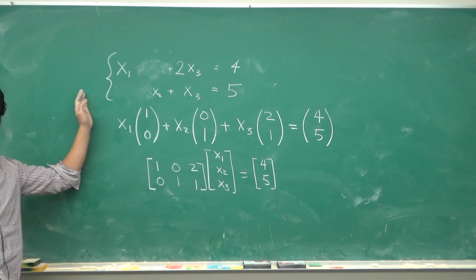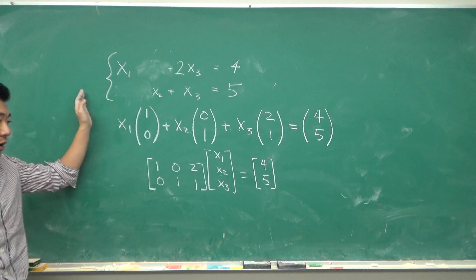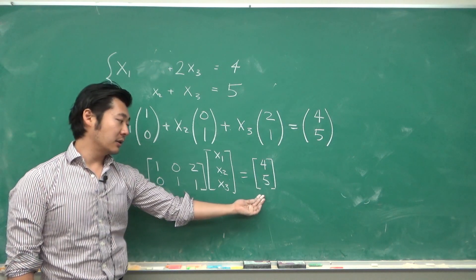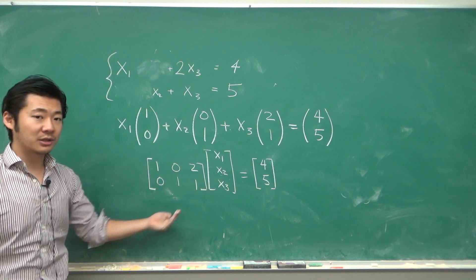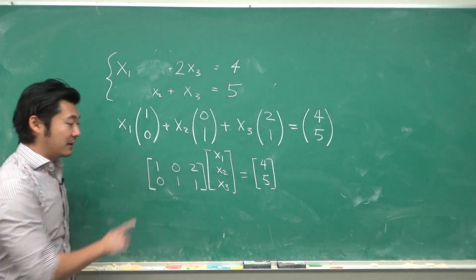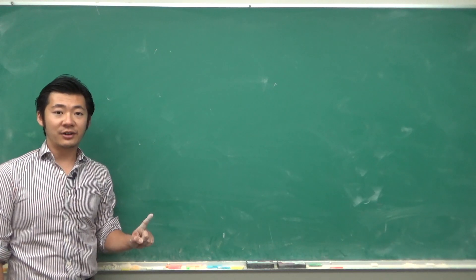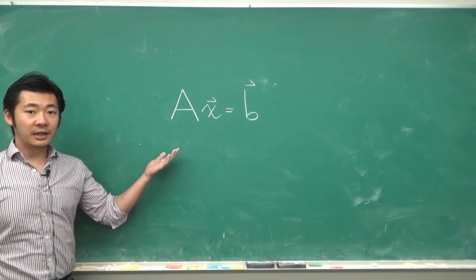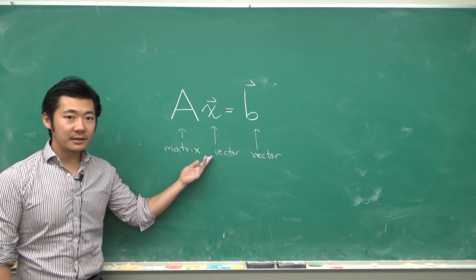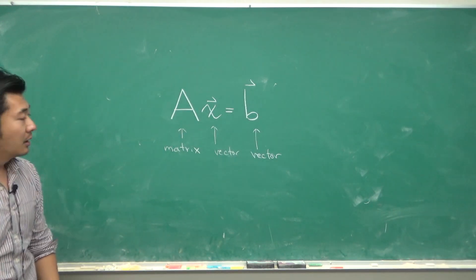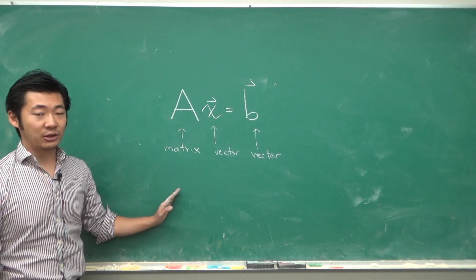So finding a solution to this linear system of equations becomes a problem of asking whether this constant vector is in the span of the columns of this matrix. And so this is the heart of linear algebra: studying this matrix equation where A is a matrix and X and B are vectors. What we are interested in is whether this matrix equation has a solution or not.